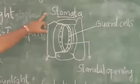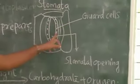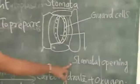This is the structure of a stomata. There are two guard cells and this is the stomatal opening.